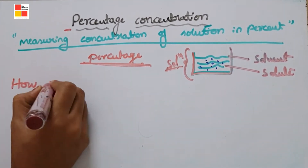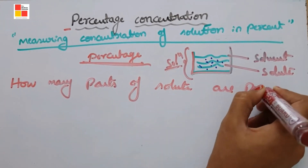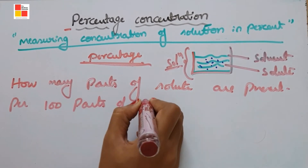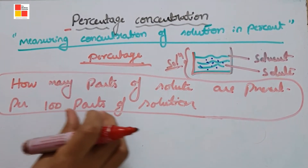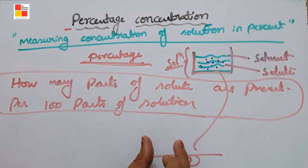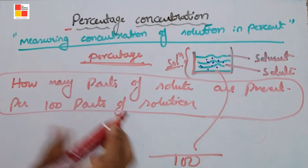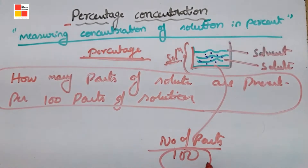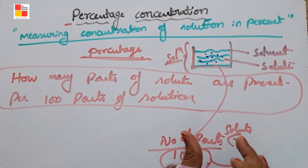How many parts of solute are present per 100 parts of solution? This is the definition of percentage concentration — the number of parts of solute present per 100 parts of solution.